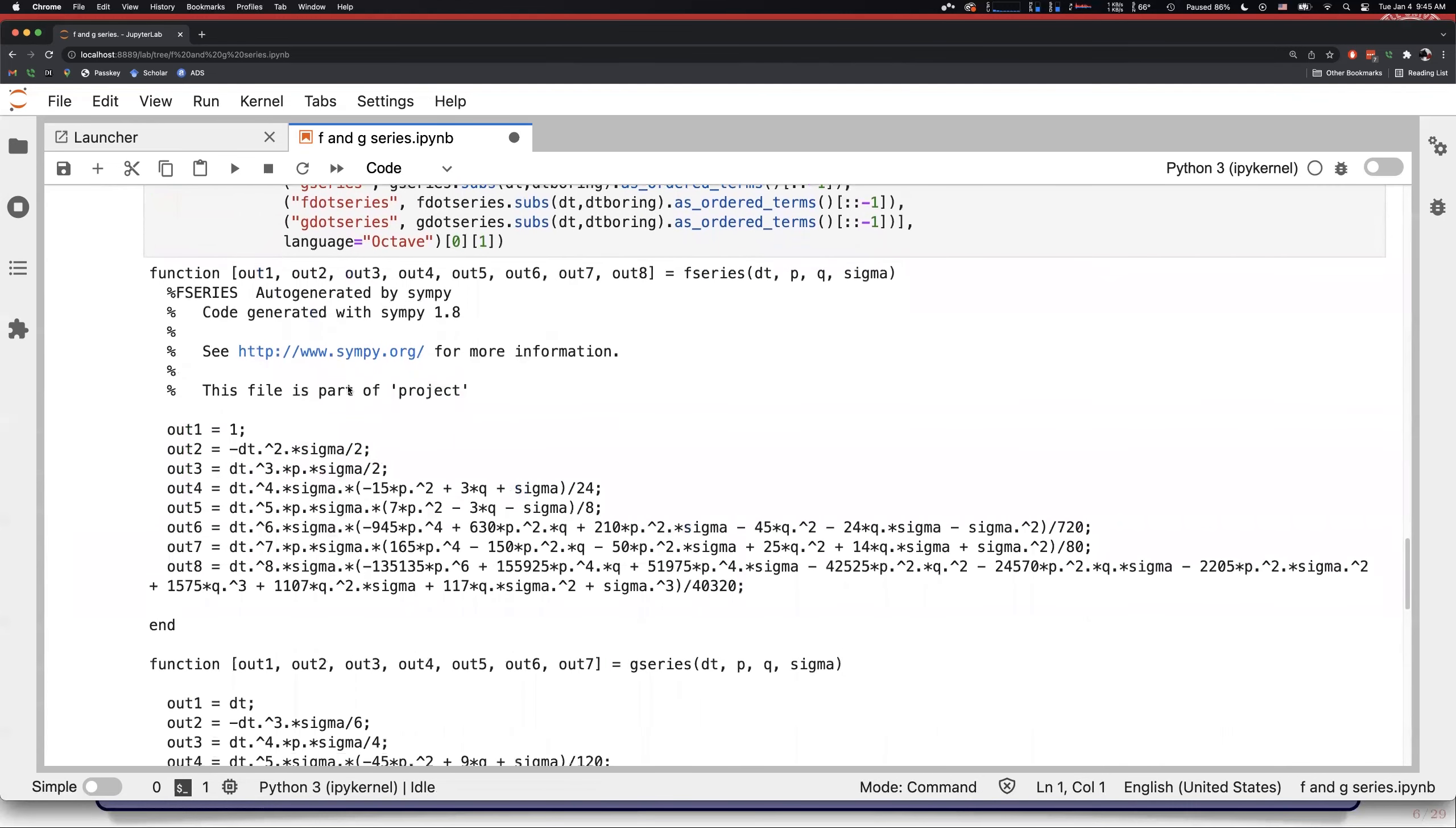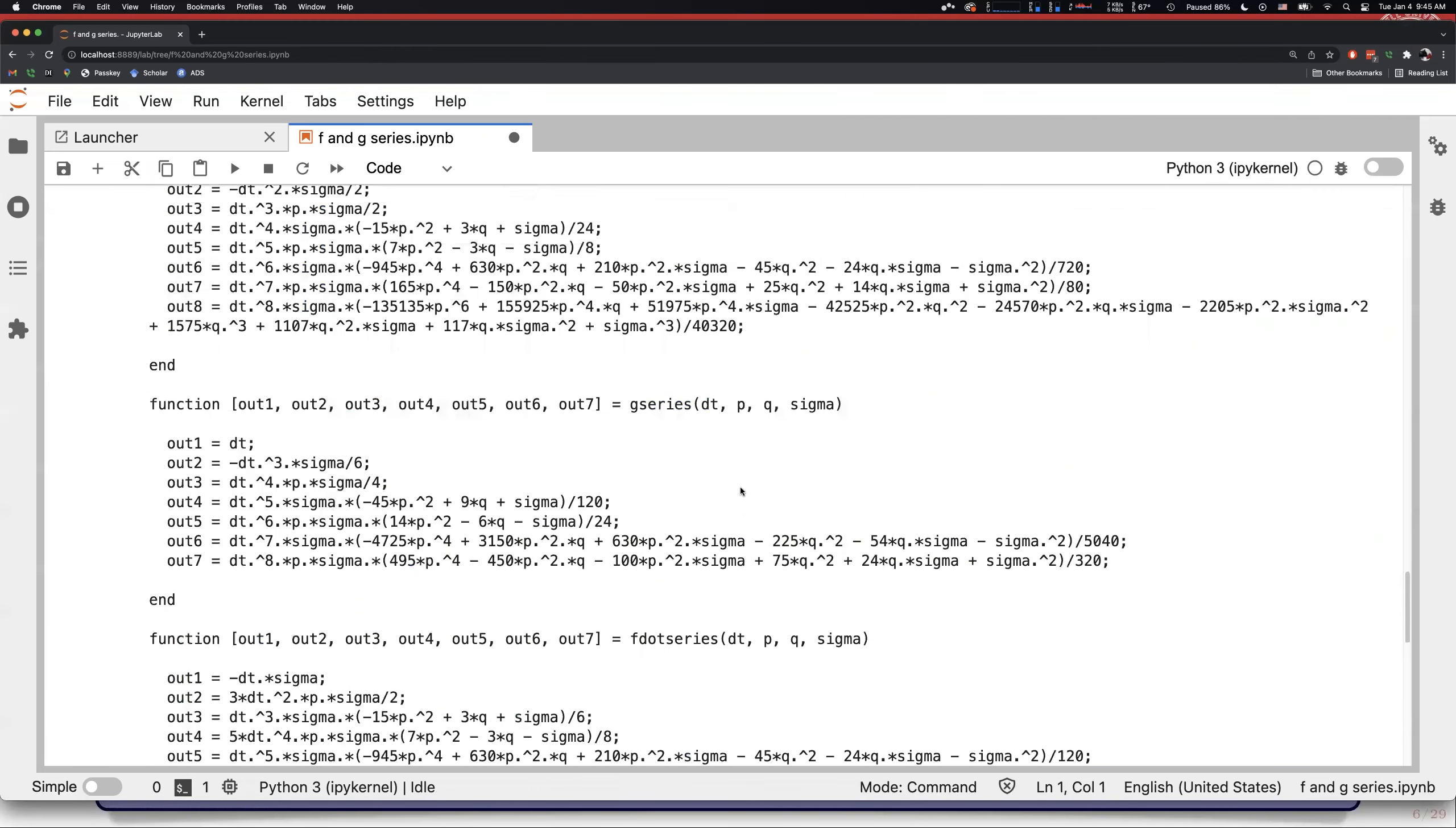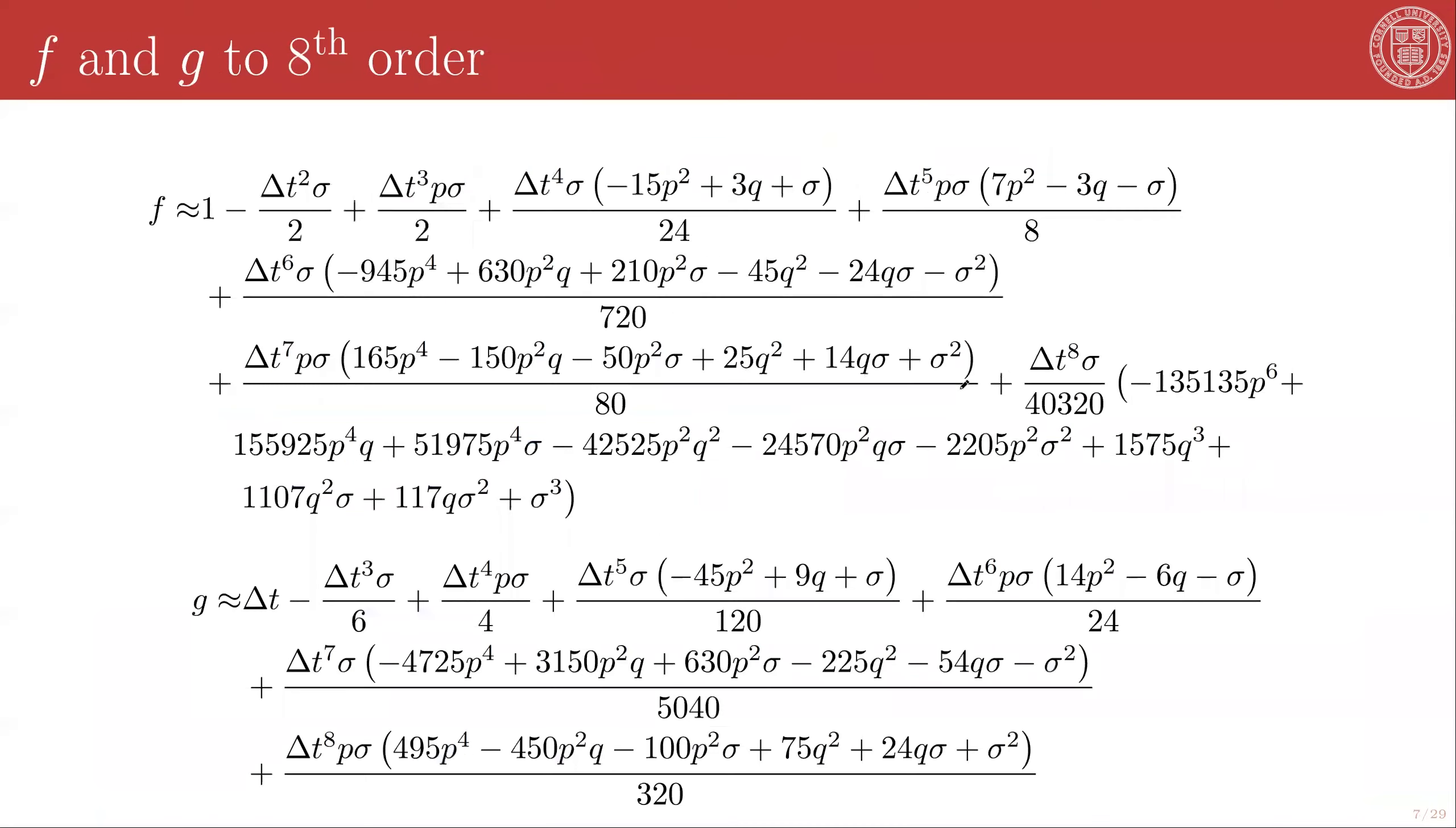Here's our f series function. And here's our g series function. And here's our f dot series function. And here's our g dot series function. And I can output this to a file or copy and paste it into a MATLAB script. And it is guaranteed to just work. Or alternatively, I can take the pretty version and make a slide of it and show you that f to 8th order is approximated as follows. And g to 8th order is approximated as follows. And you can do this for any arbitrary order. Although, of course, the symbolic manipulations get more and more cumbersome as you go up in order.